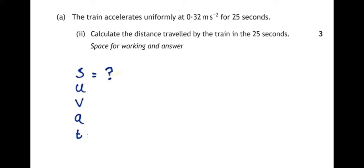U is the initial velocity of the train and as it mentioned, the train is initially stationary, so 0 meters per second. V is the final velocity of the train. We're not told this in the question and actually it doesn't matter, so we'll just put an X next to it.